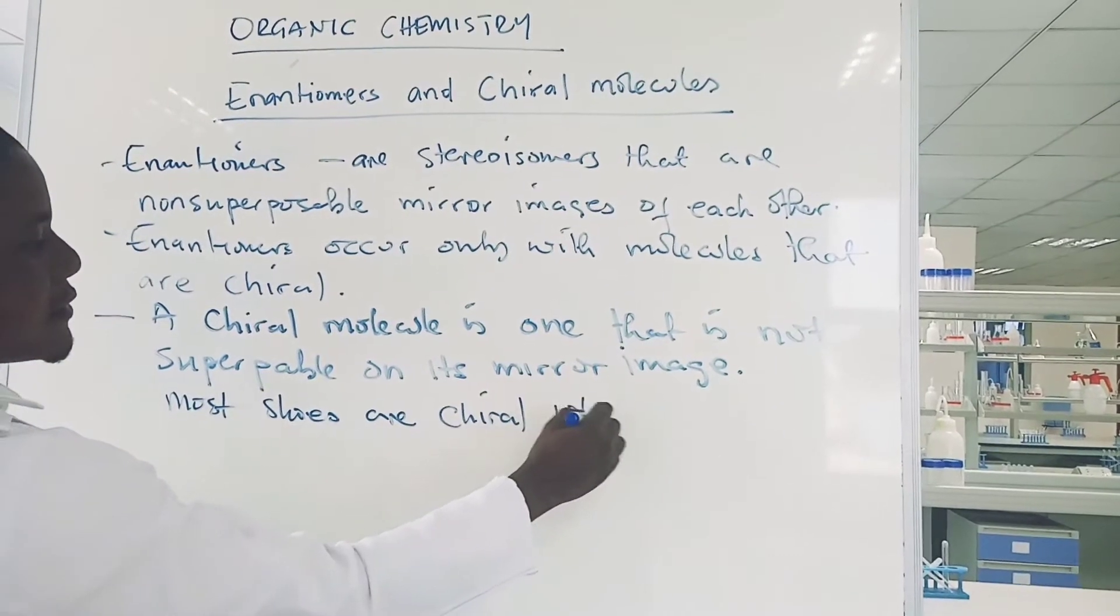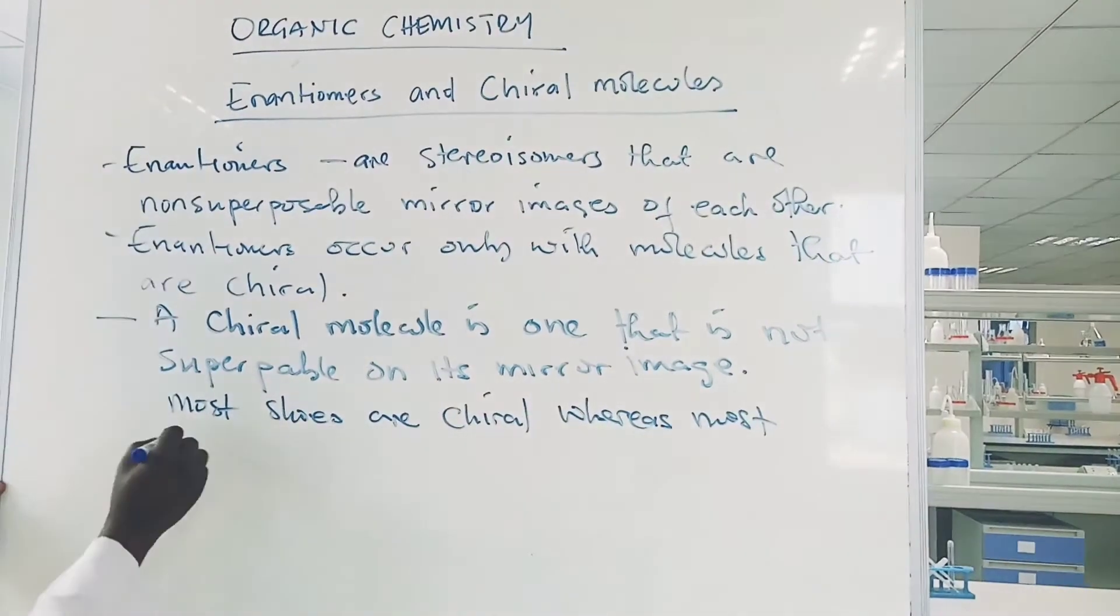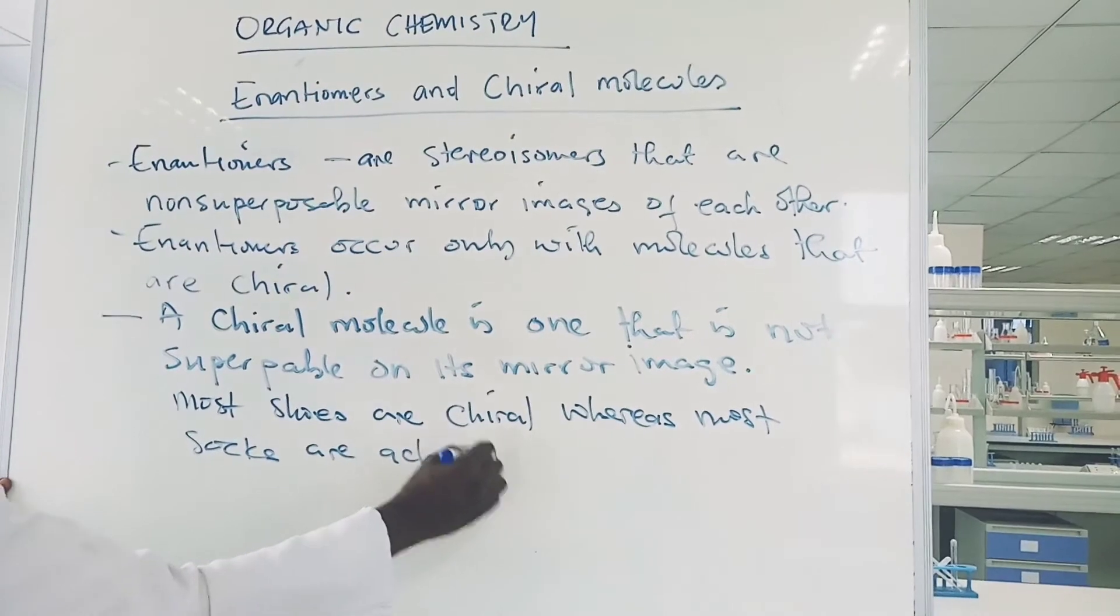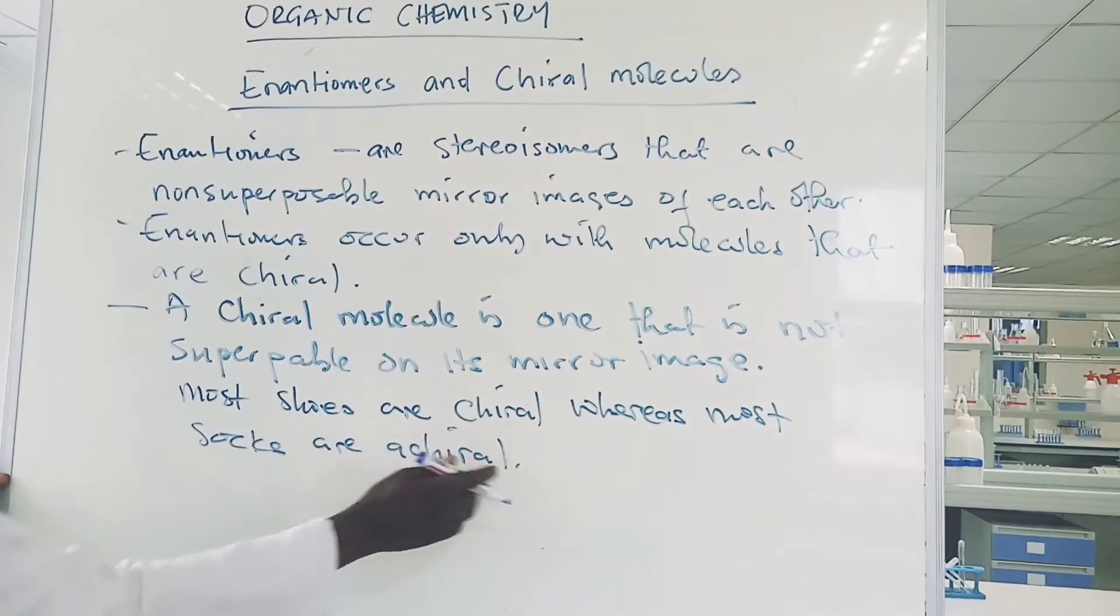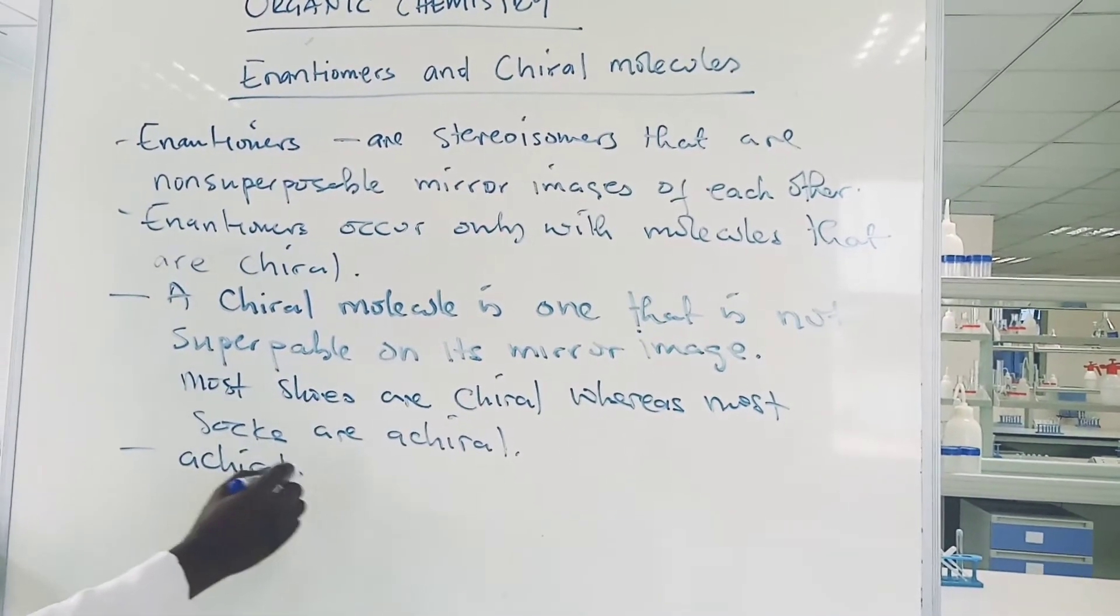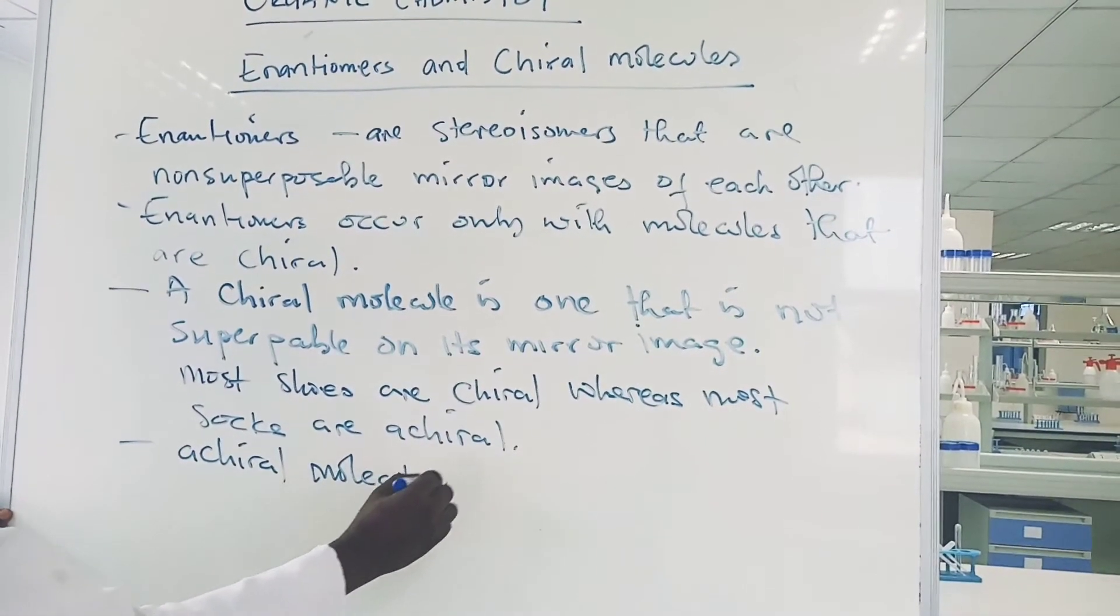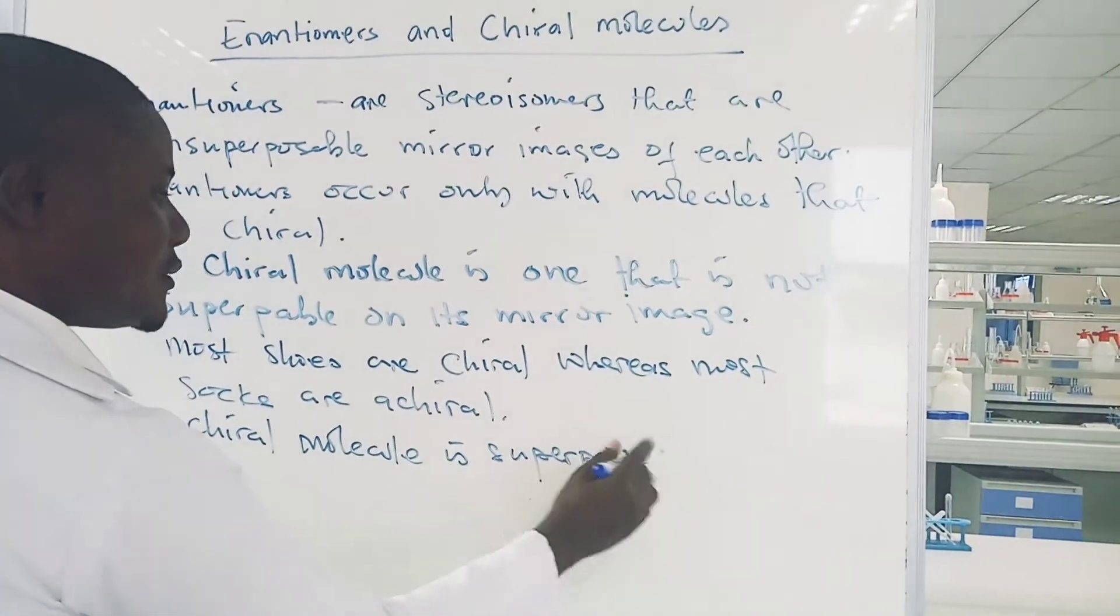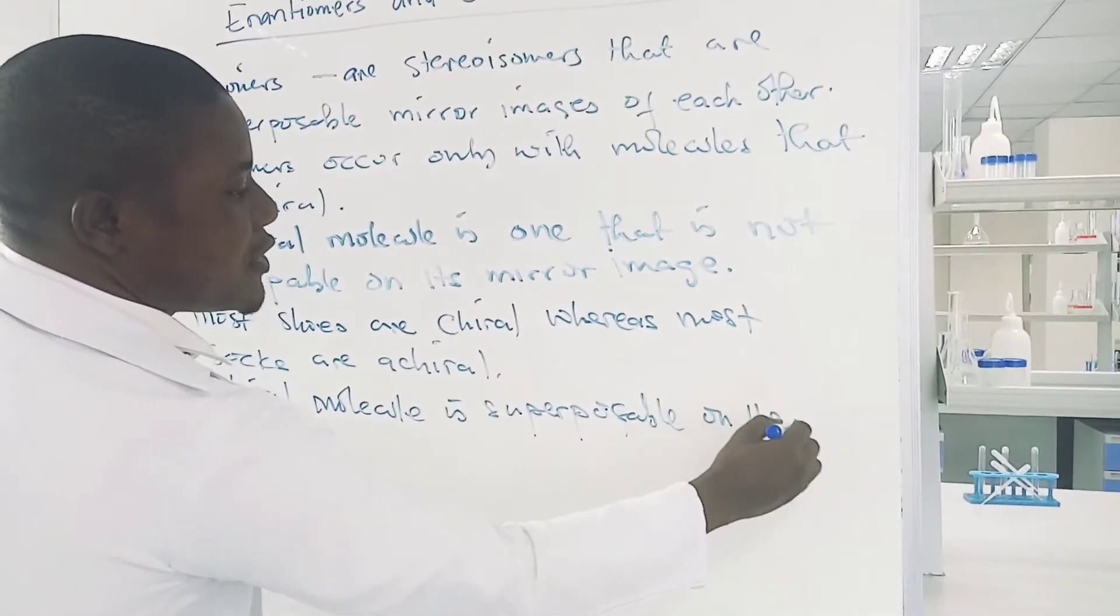Most shoes are chiral. Whereas most socks are chiral. So now the difference between a chiral molecule and achiral is that an achiral molecule is superposable on its mirror image.